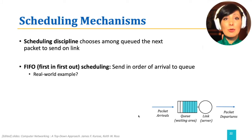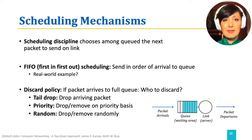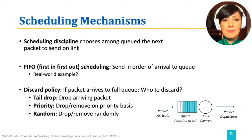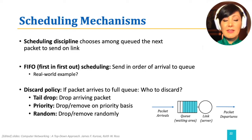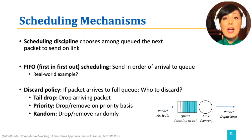If a packet arrives to a full queue, there are different ways to decide which packet to drop. It could be drop tail, meaning a newly arriving packet to a full queue will be dropped — similar to a payment line where the cashier will close after servicing a number of people already in line and will not provide service to you. There are also other ways of deciding packet discard, such as random drop or based on priority.